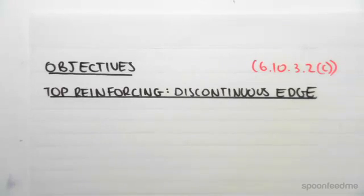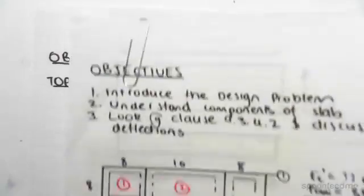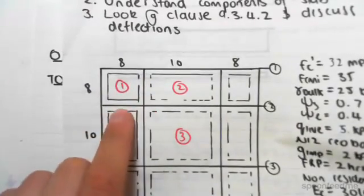Hey guys, the objective of this video is to find the top reinforcing at a discontinuous edge. In the previous video we looked at the continuous edge, which was the edge there and there for slab one.